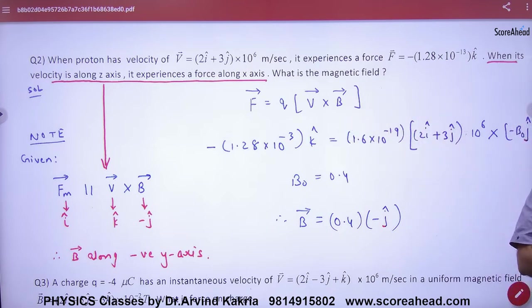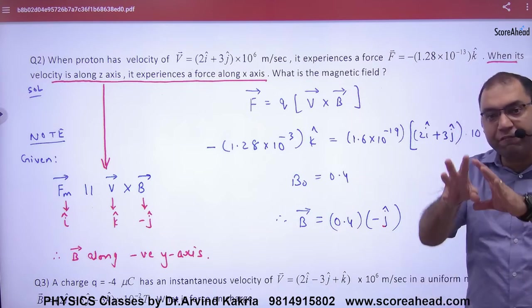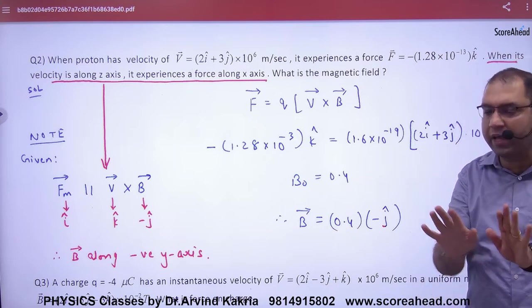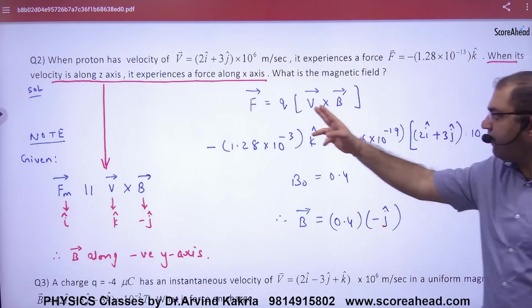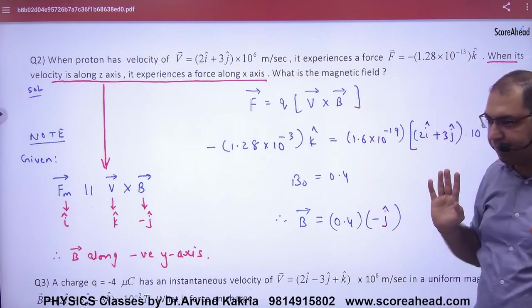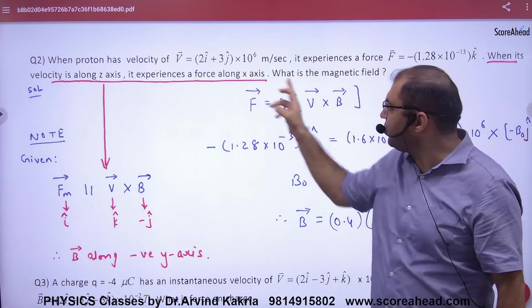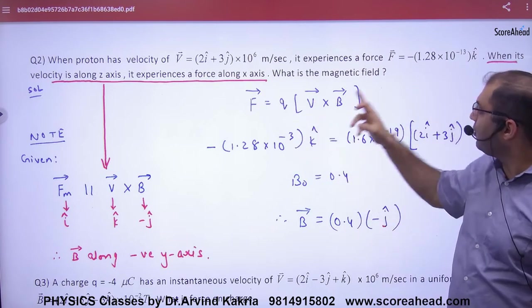Now, see this question we have done in sheet. There was some other sheet, R is M V Y V Q, which we have done in 6 cases. Now, this concept is on force. We have a formula in the vector form: F vector is Q into V cross B. What is given? Velocity vector is given, we have force vector.